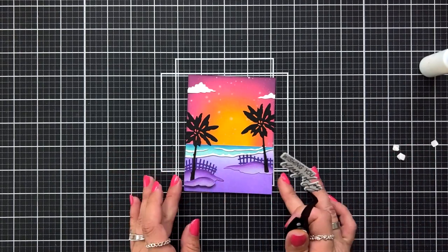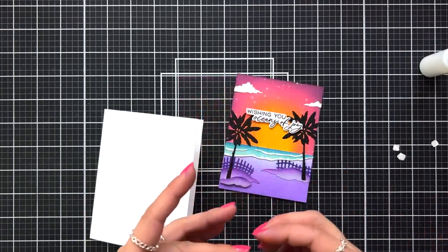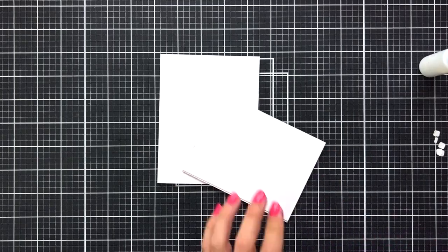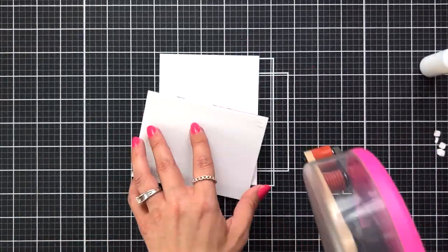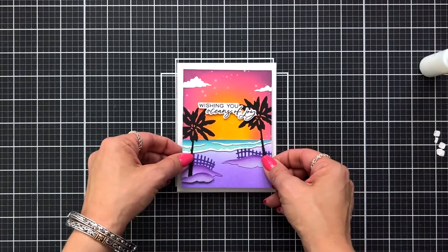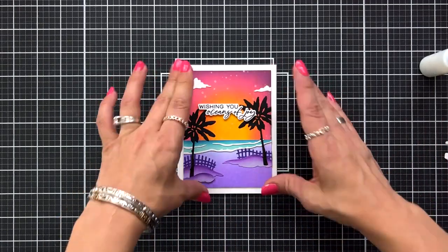I love adding the foam squares for this because I think that helps set the sentiment apart from my colorful background. I have an A2 size side folding card base that I'm holding closed with low tack tape. And then I'm adding tape runner to the back of my ink blended panel and I'm going to line this up over that card base, just making sure I'm keeping my margins nice and even and it leaves that really nice clean edge.